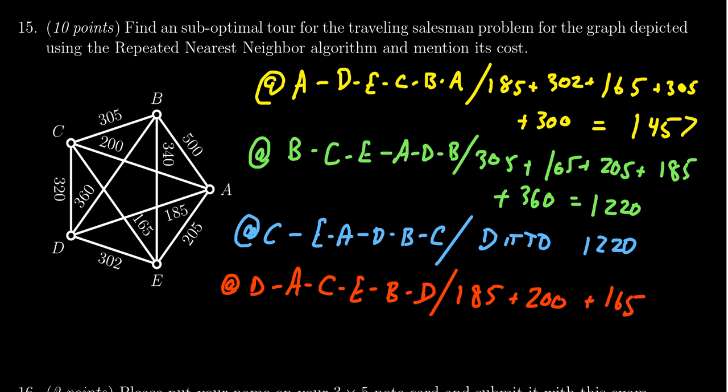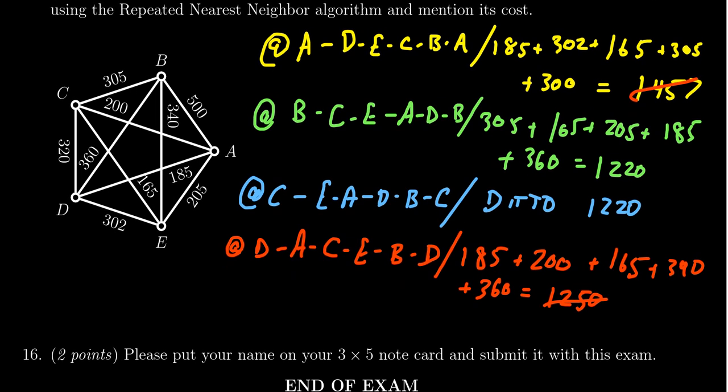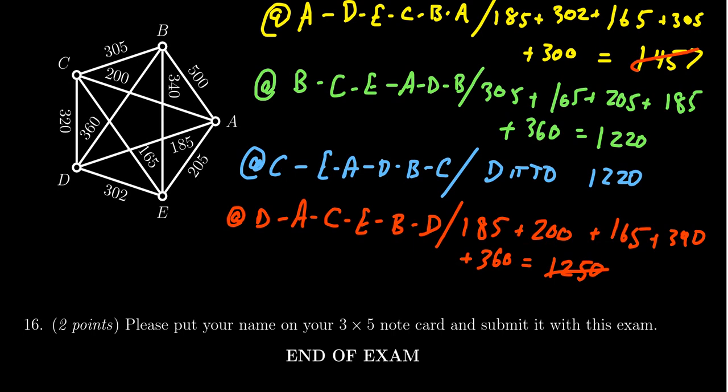+ 340 + 360, which equals 1250. Notice the ones that start at B and C are the best so far. For the final attempt, we start at E.